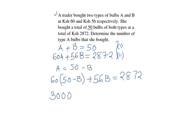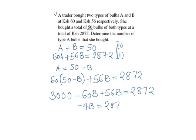We collect the like terms together and we'll have negative 60B plus 56B is negative 4B, which is equal to 2,872 minus 3,000. So 2,872 minus 3,000 gives us negative 128.